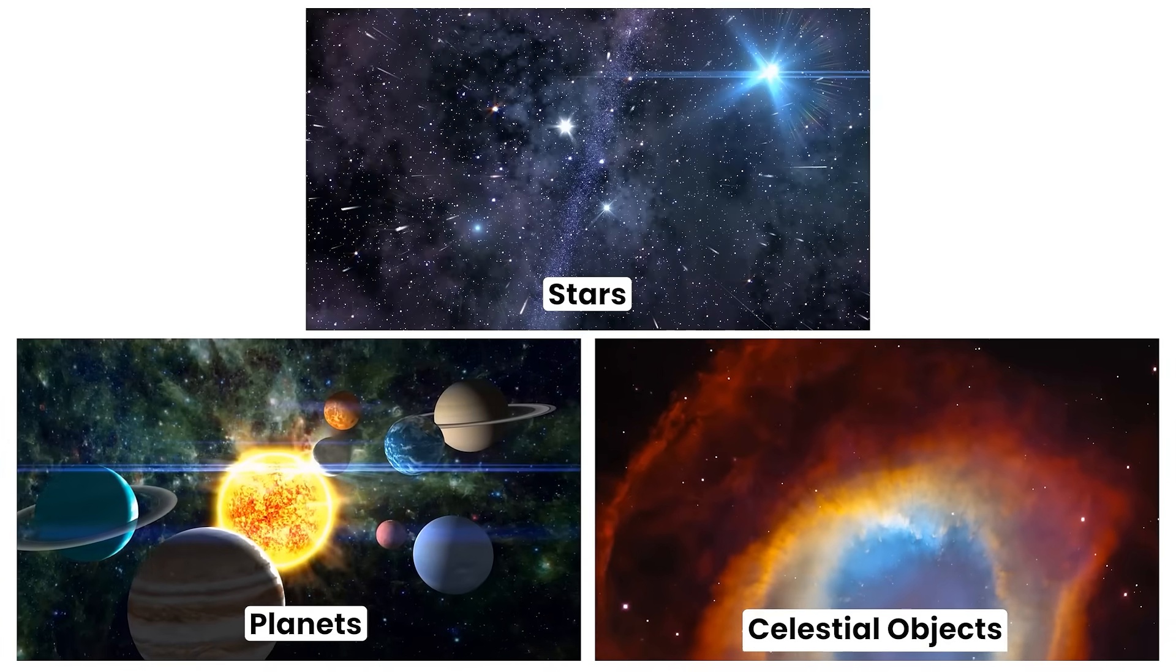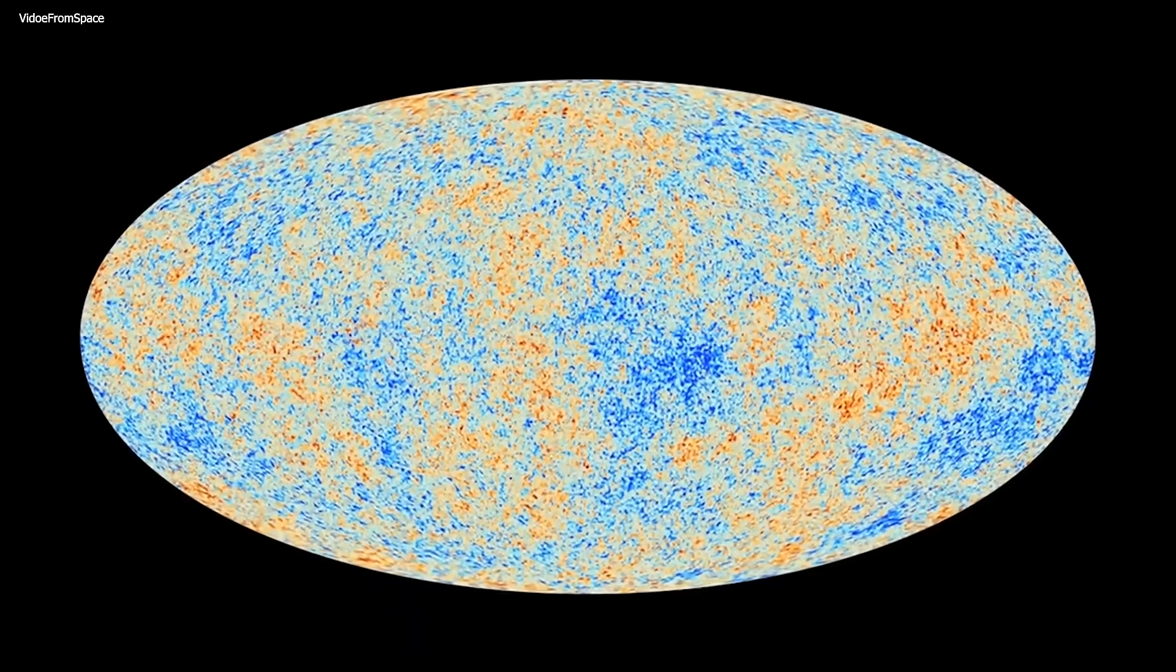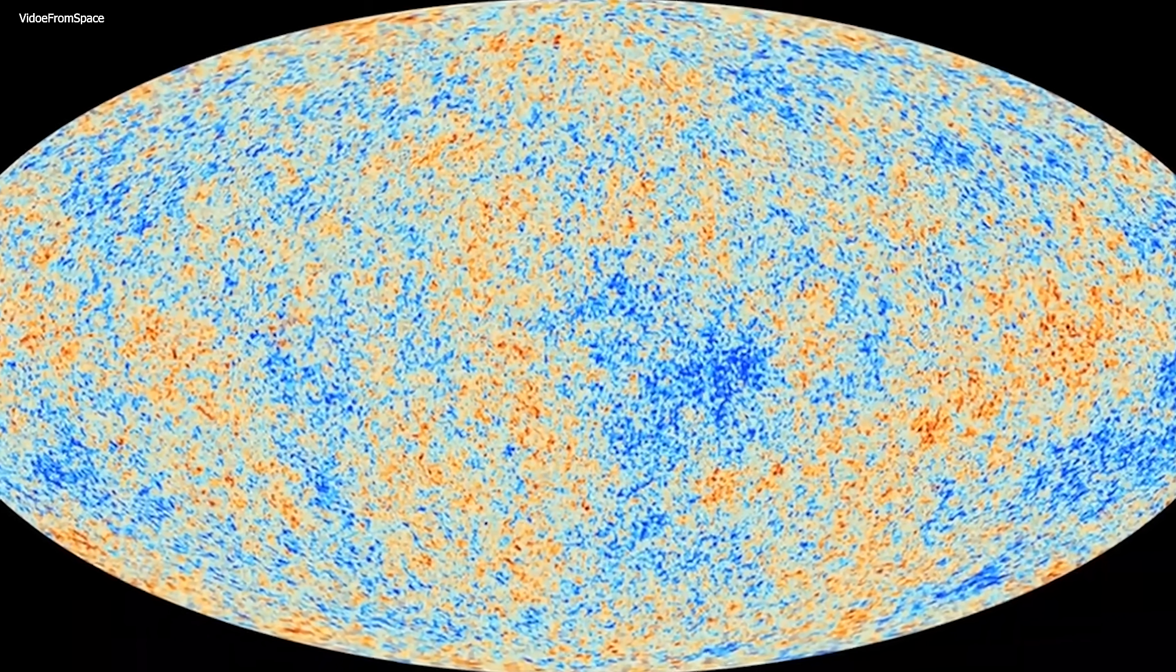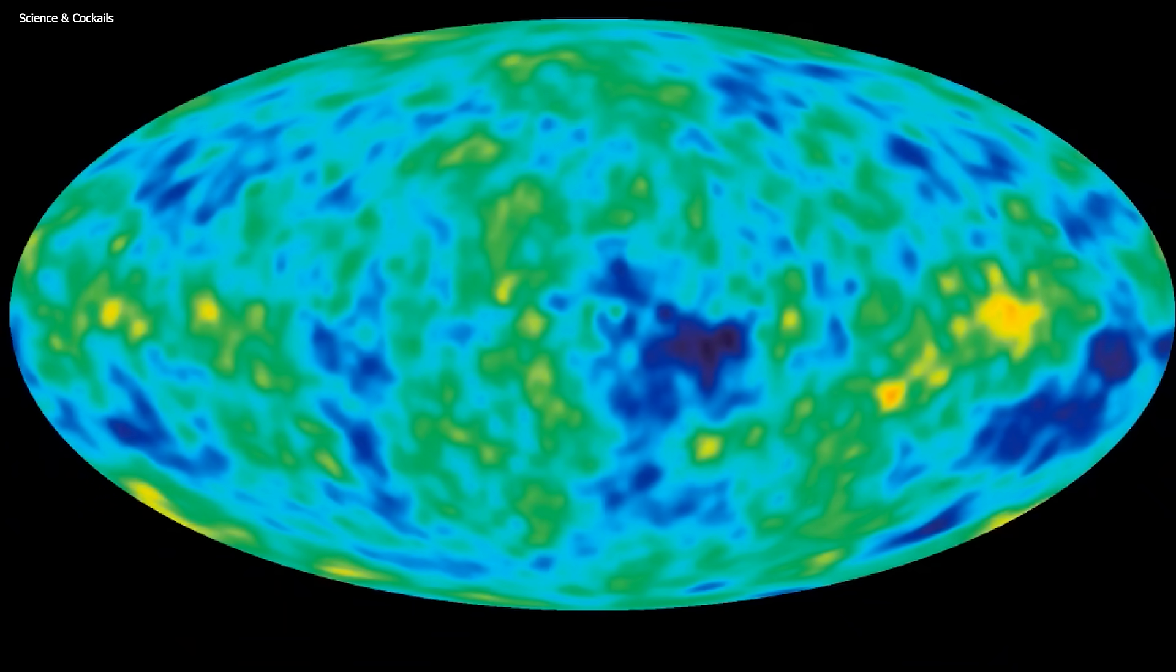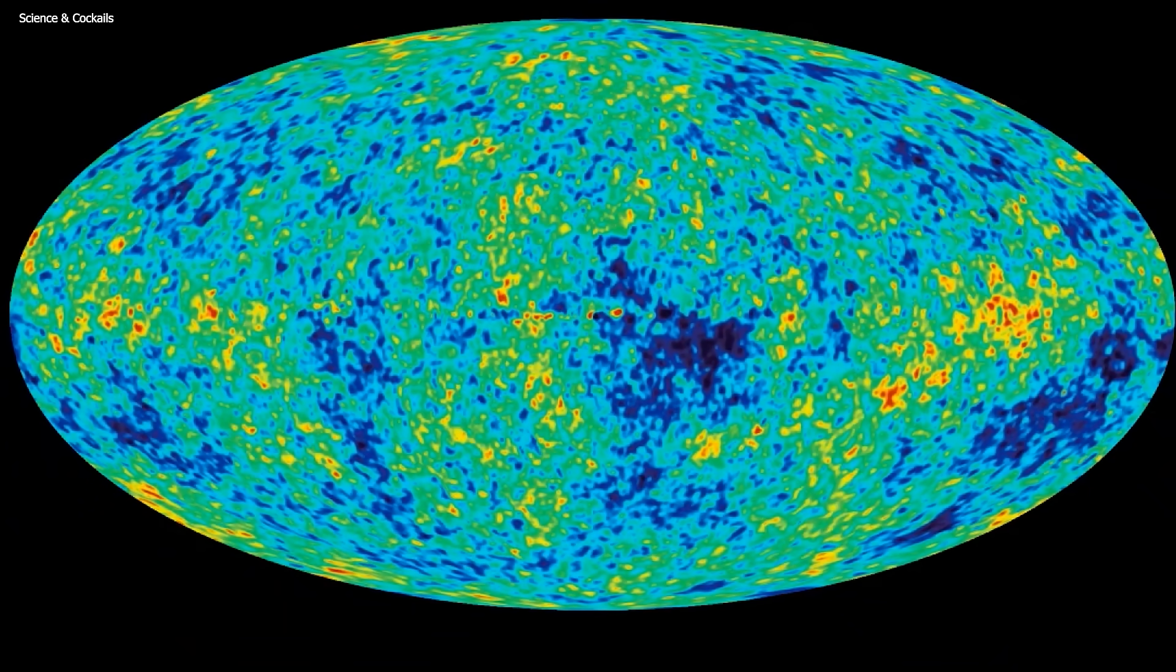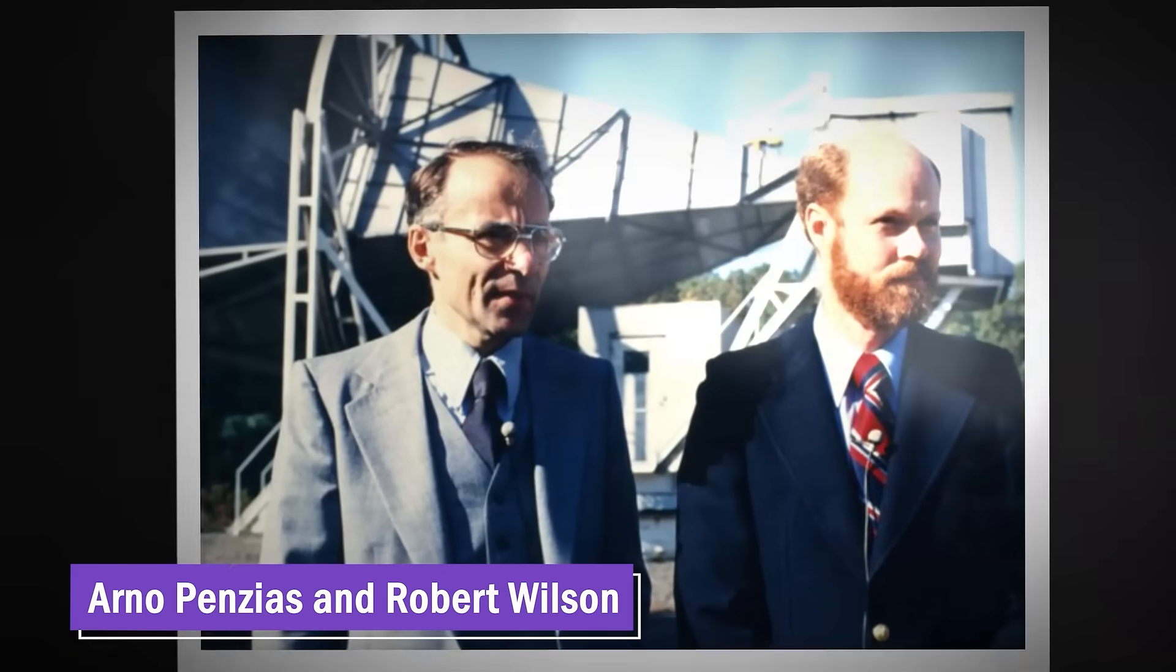Stars, planets, and other celestial objects. But did you know that the oldest light in the universe is still present today? This light is called the cosmic microwave background, and it fills the entire universe. The CMB is a type of electromagnetic radiation that was first discovered in the 1960s by two radio astronomers, Arno Penzias and Robert Wilson, who were studying radio waves in space.